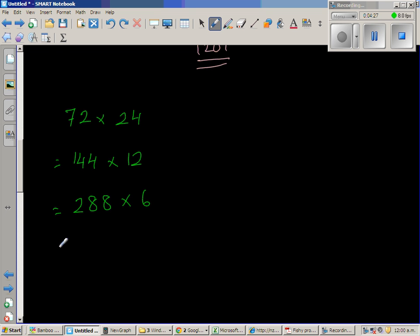So I can again double this and halve this. So this is double of 200 is 400. Double of 80 is 160. And double of 8 is 16. So this is 576. So this is 576. Let me write this better. So this is 576 times half of 6 is 3.